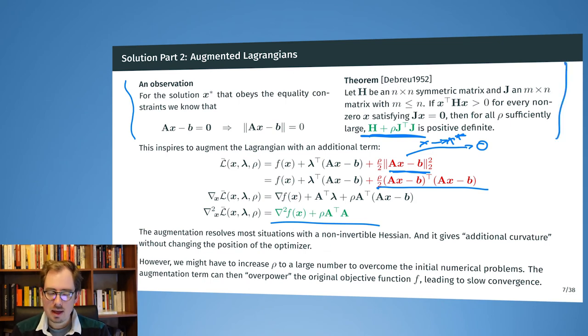And the conditions from up here, so the conditions for this theorem, they don't hold in every case. But this is a strong motivation to look for the rho that makes our Hessian of the Lagrangian, of the new Lagrangian, positive definite. However, we might have to increase this rho to a quite large number to overcome the numerical problems to have an invertible Hessian. However, when this rho becomes too large, then it can overpower the normal objective function. And then we run into new numerical problems where we need a long time to converge. So also this augmented Lagrangian, if we take this purely, then convergence can be really slow.